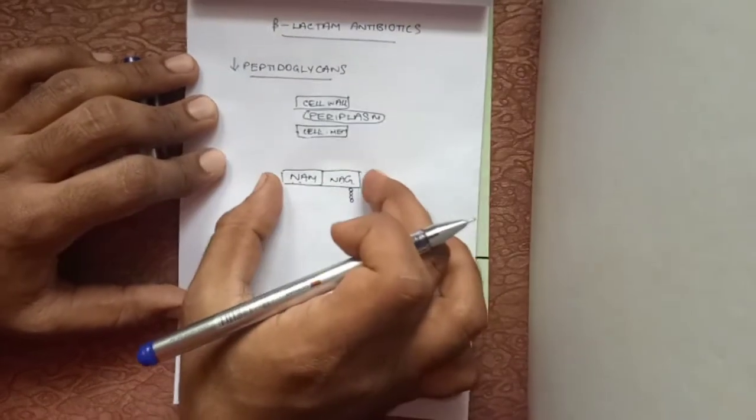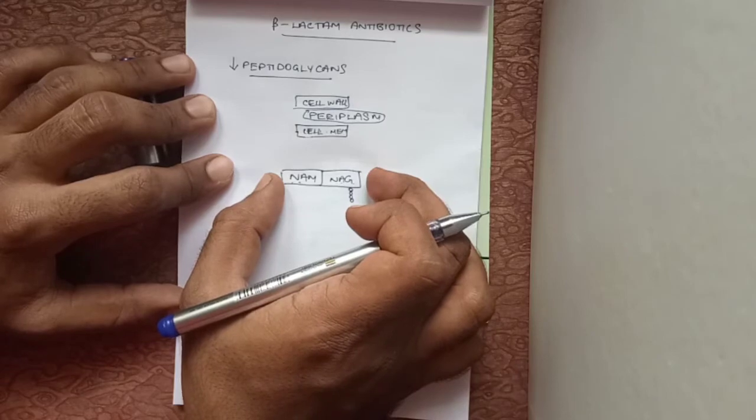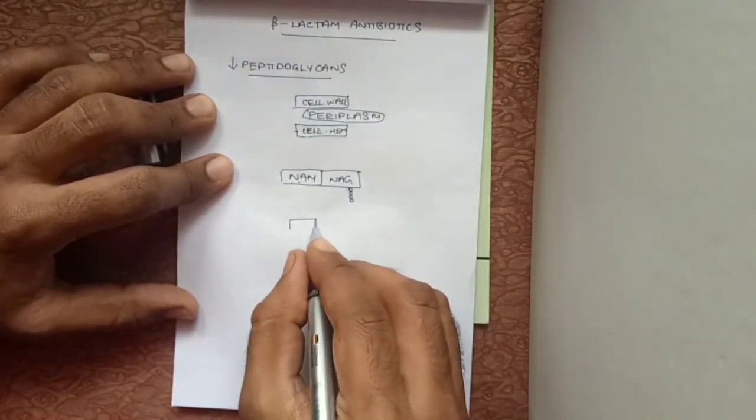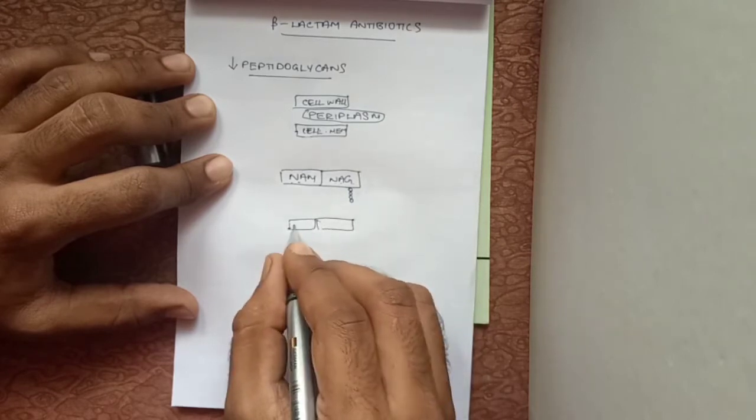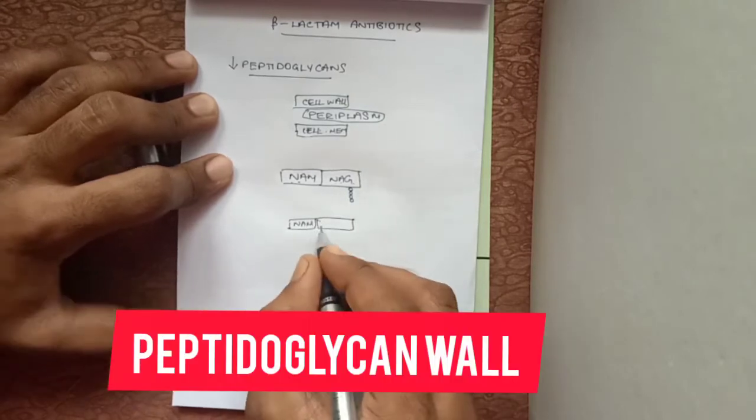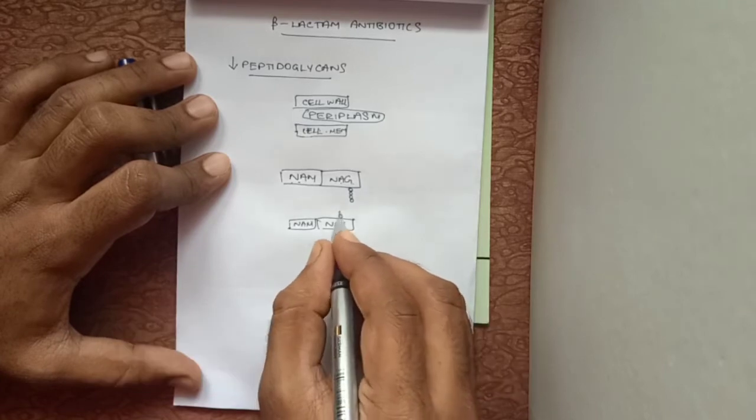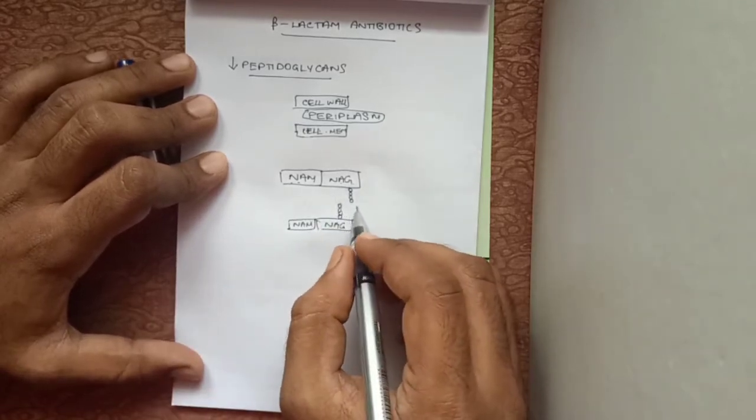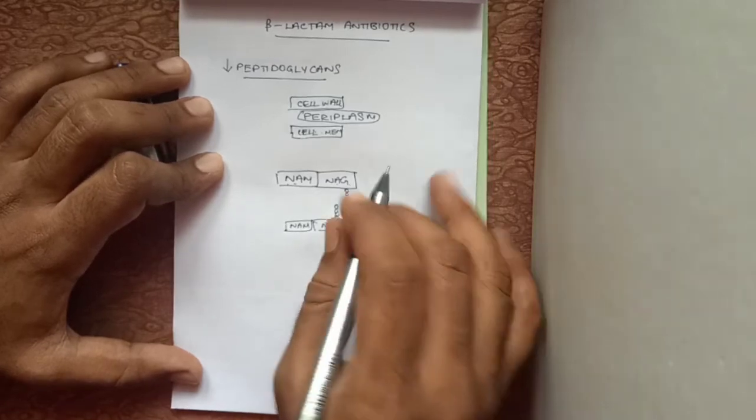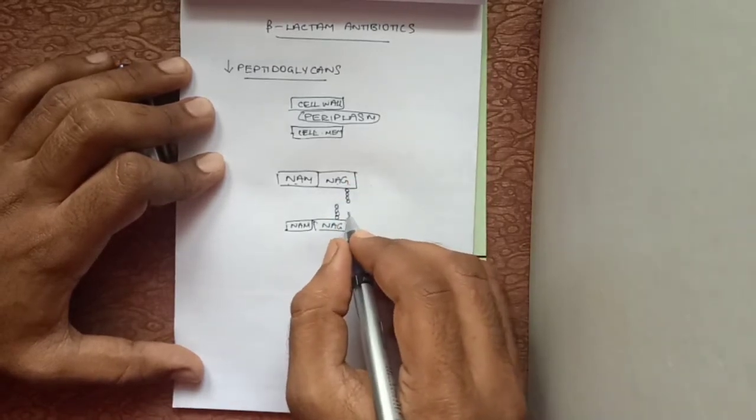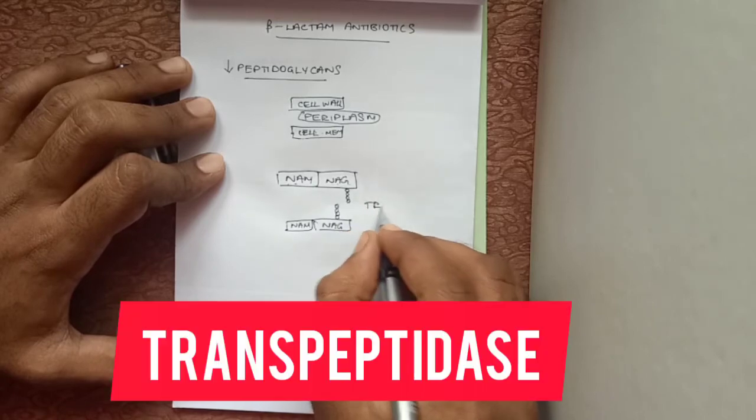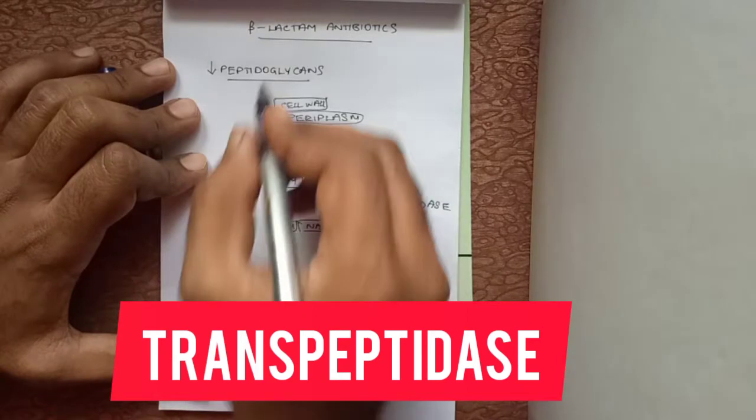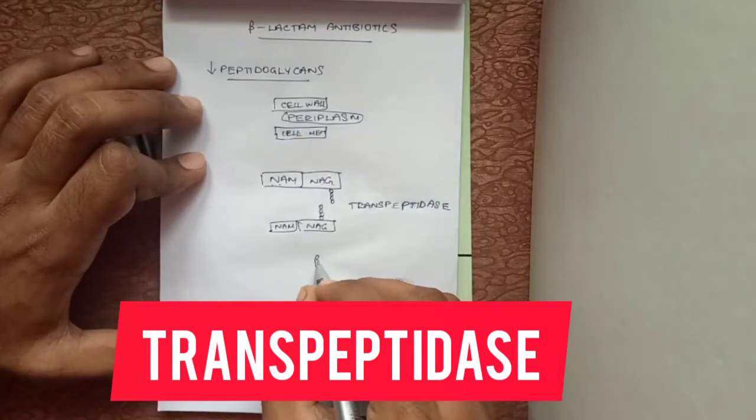Now this block of peptidoglycans joins similarly with other blocks of peptidoglycans so that it forms a strong cell wall. It is bonded to each other by the help of the enzyme transpeptidase.